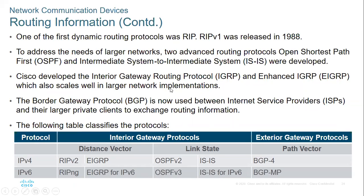If you are running Cisco routers, the dynamic routing protocol you must use is EIGRP. Before EIGRP, we had IGRP, and IGRP was replaced by EIGRP.